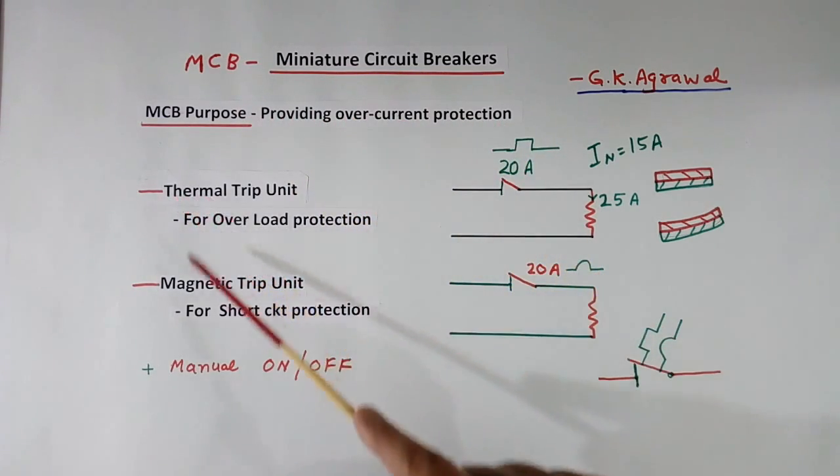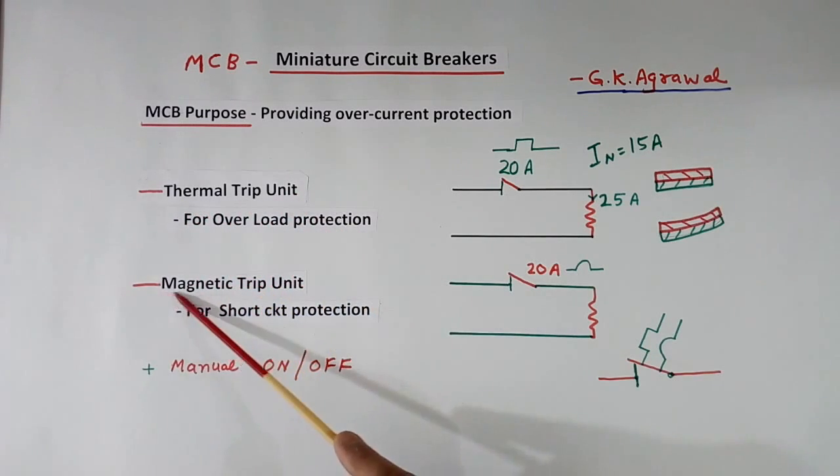Generally it consists of 3 parts: thermal trip unit, magnetic trip unit, and manual on/off.